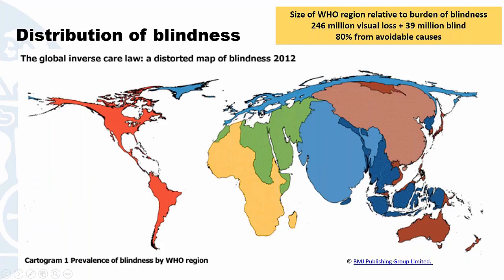Looking at the magnitude of visual impairment — which is 285 million people — and as you can see from this rather distorted map, where are these blind and visually impaired people? We find that the countries shown in a rather swollen perspective is where they are mostly. Whereas you can see within the Americas and in Europe that these have shrunk down quite a lot from actual size, because the numbers of visual impairment is less. So you can see an uneven distribution of the burden of visual impairment across the world.